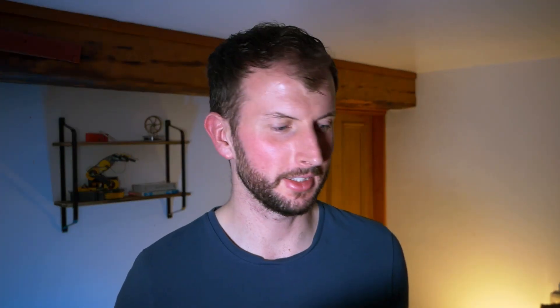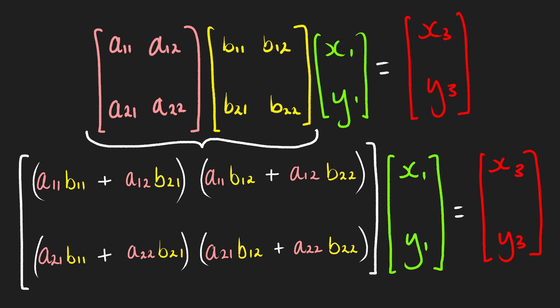So let's compare the separate matrices A and B when multiplying x1, y1 to when we have all of the coefficients of x1 and y1 in a matrix multiplying x1 and y1 to achieve the same result getting us to the vector x3, y3.